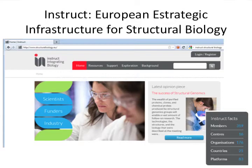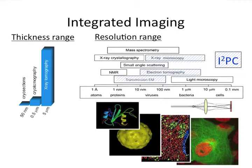Basically this is INSTRUCT, and our work as the INSTRUCT Image Processing Center, I2PC, is in the imaging arena — x-ray microscopy, electron microscopy — and the point is how do we actually understand the cell at atomic resolution, how do we integrate mass spectroscopy, ray spectroscopy, NMR, all these data-producing strategies, and how do we go to biological knowledge linking all the structural information with bioinformatics, genomics, proteomics, and all that.